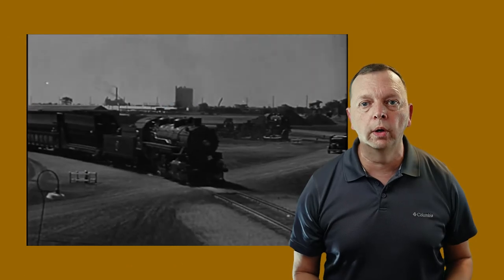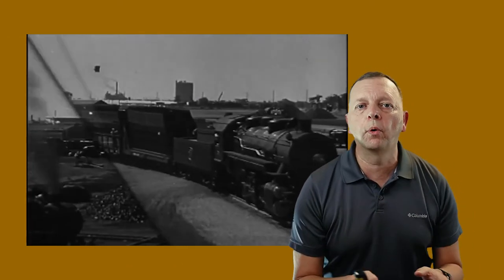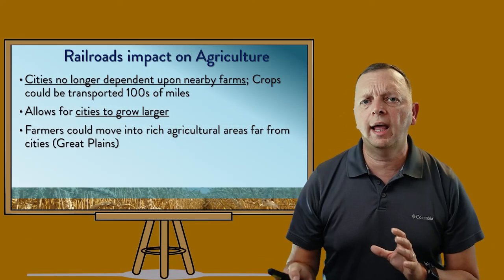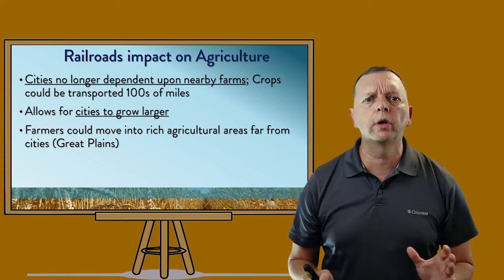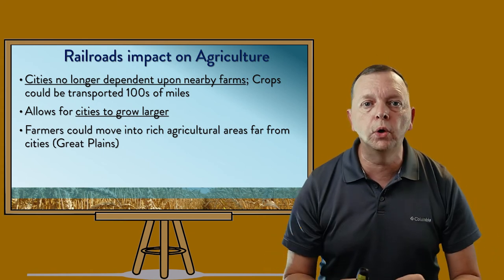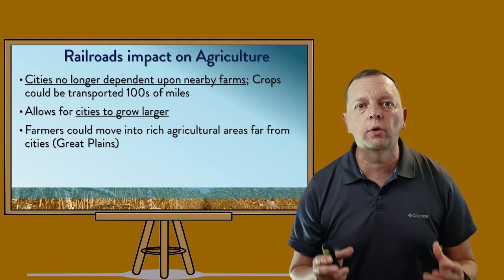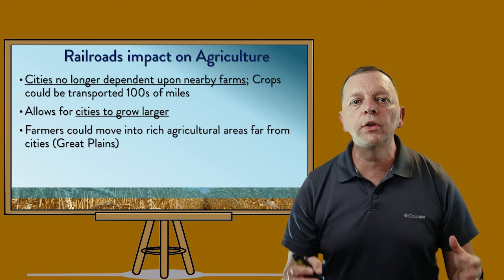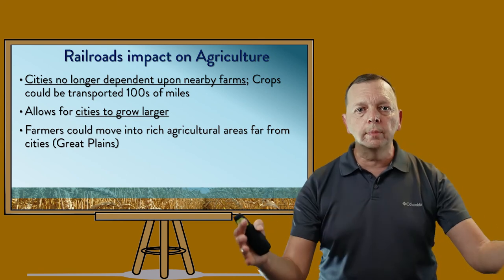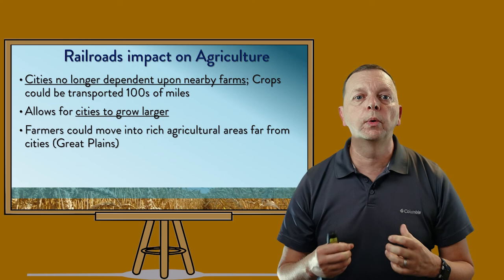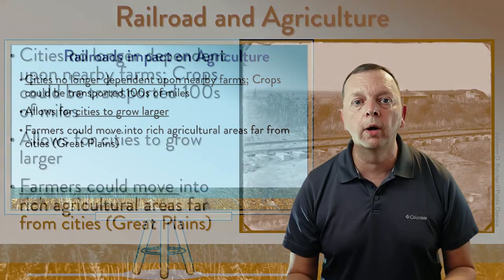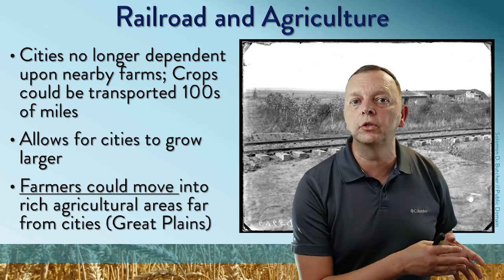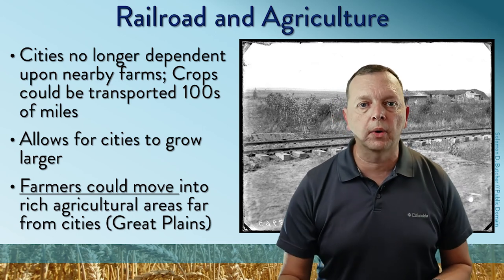Then we had the railroads, which were incredibly important. Before the railroad, cities were pretty much dependent upon the farms that were around them. If the agricultural areas were not very good around the cities, you had less food and the cities didn't grow very much. But now, because of the railroad, farmers could ship their goods hundreds of miles away. So cities had a much larger area from which to bring food in, and therefore our cities were able to continue growing bigger and bigger. This also meant farmers were now able to go into rich agricultural areas, such as the Great Plains, because you had train service into them.